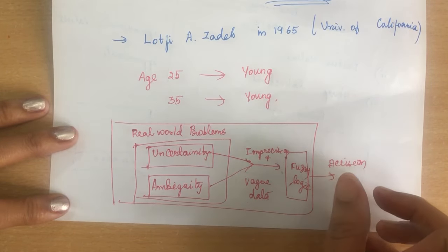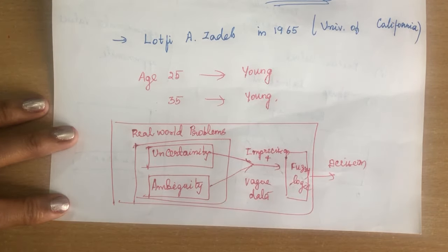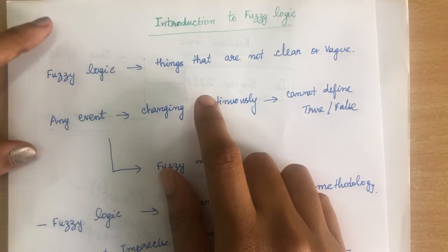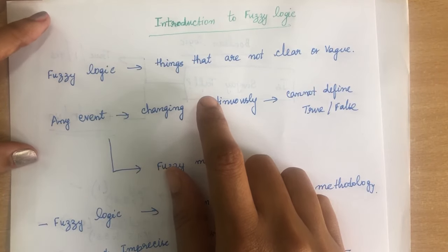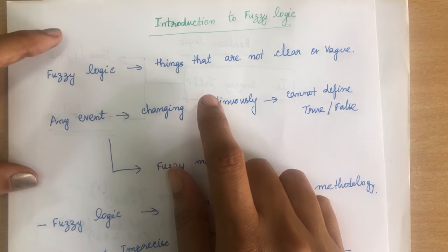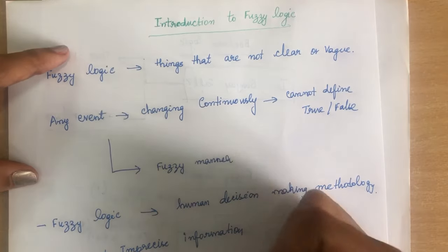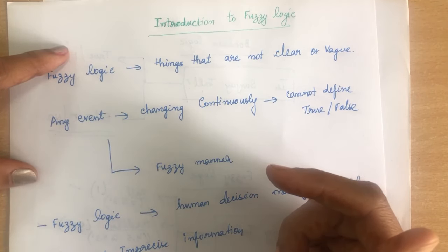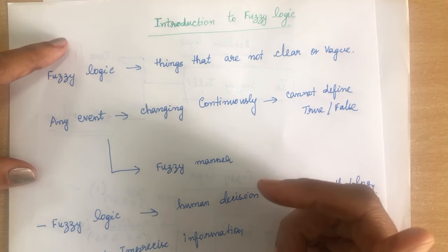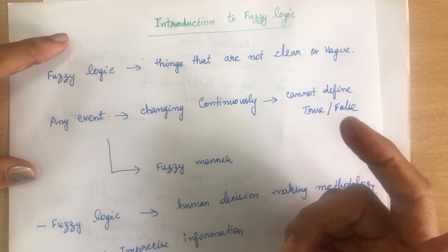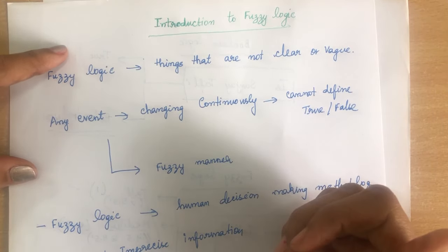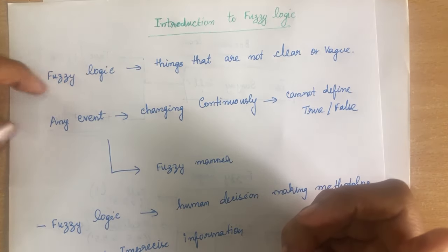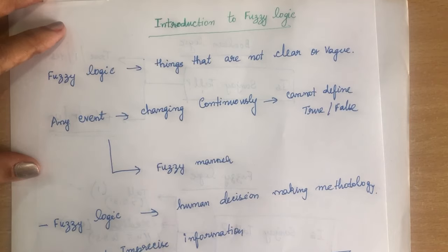This logic is called fuzzy logic. In this video, I have clearly explained what fuzzy logic is — an introduction to fuzzy logic. In the next video, I will explain the classical set, otherwise called crisp set, and fuzzy set. Thank you all for watching.